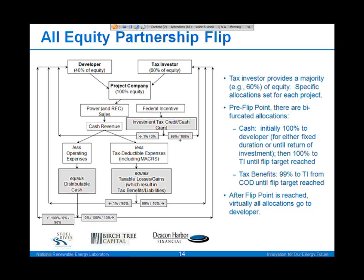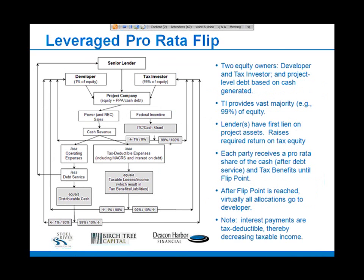After the flip point, essentially all allocation of tax and cash benefits will go to the developer. The leveraged partnership flip is what we refer to as a pro-rata structure, where cash and tax benefits are allocated to the developer and tax equity investor on a pro-rata basis based on their share of the equity invested.